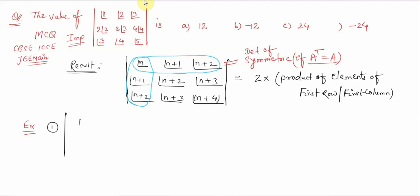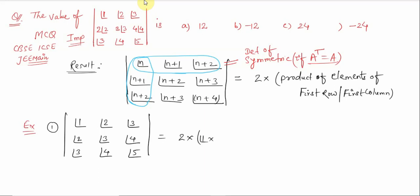Using this result, if we have to find the value of the determinant with entries 1!, 2!, 3!; 2!, 3!, 4!; 3!, 4!, 5!, then we simply write it is equal to 2 times the product of the first row elements: 1! × 2! × 3!. Finally we get 2 × 1 × 2 × 6, which equals 24, or equivalently 4!, so this is the result.